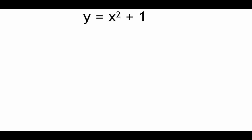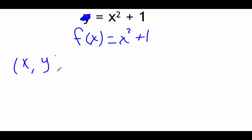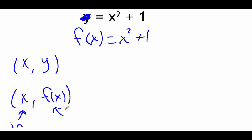Using our earlier example y equals x squared plus one — which is a function — I want to talk about function notation. This is how we represent equations to tell others that what we're looking at is a function. The only change is we replace y with f(x). So instead of ordered pairs x comma y, we write x comma f(x), where x is still our input and f(x) is our output.